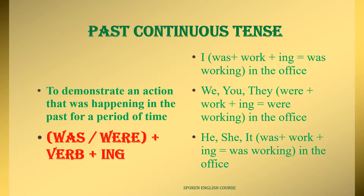So the second type is past continuous tense. Just like present continuous tense describes an ongoing action in the present, past continuous tense describes an ongoing action in the past.